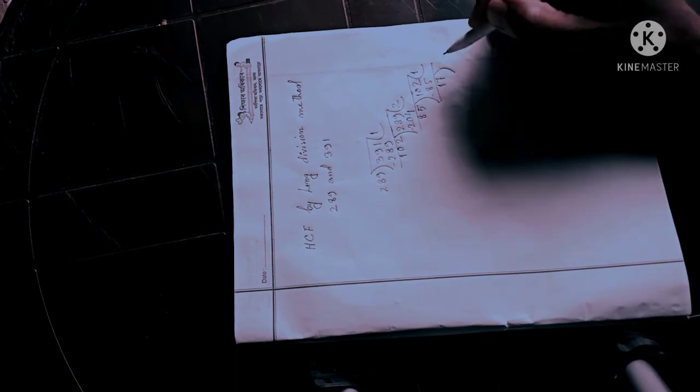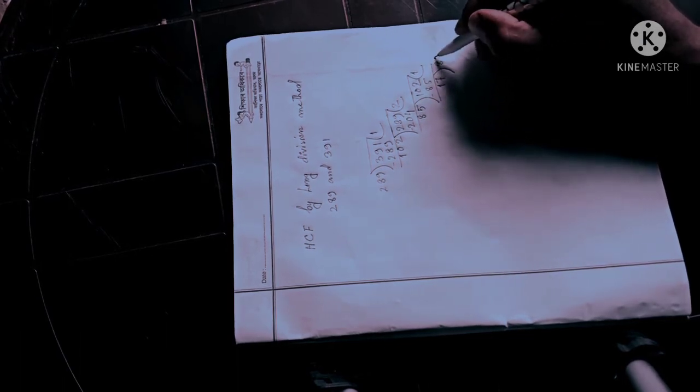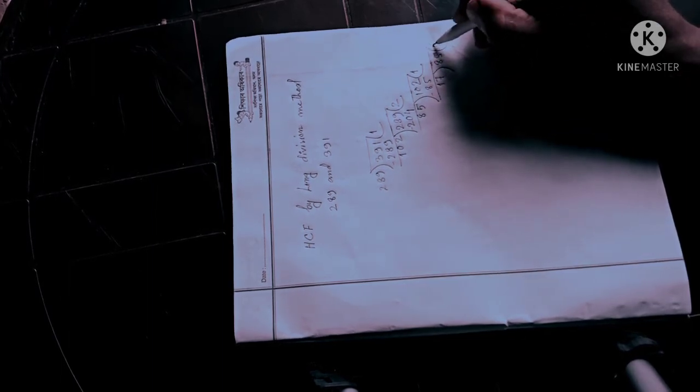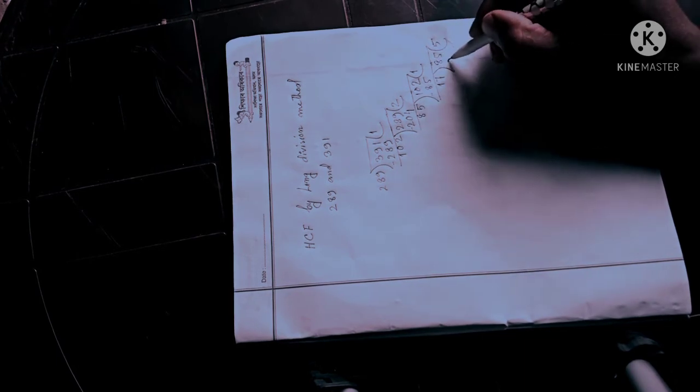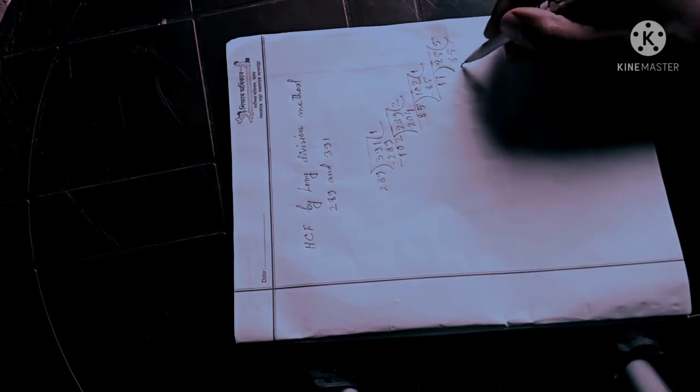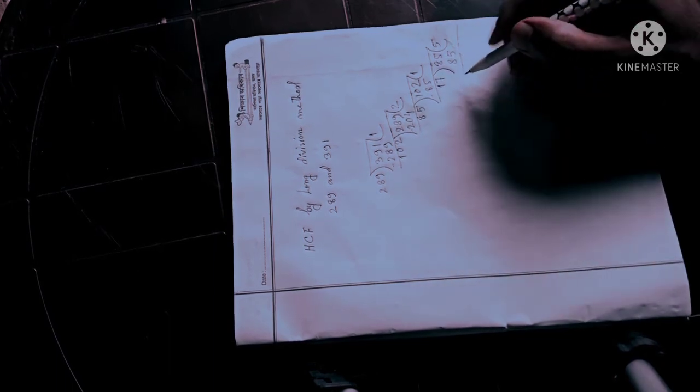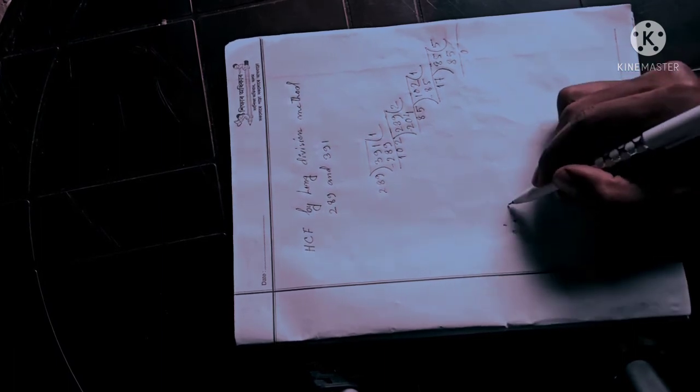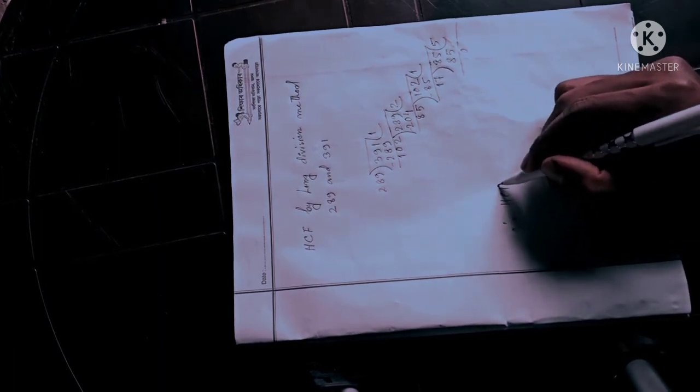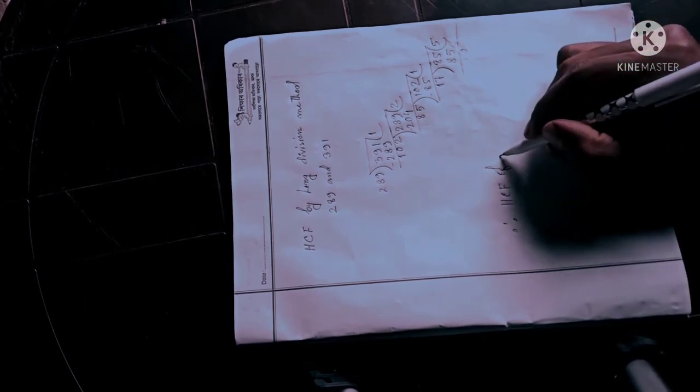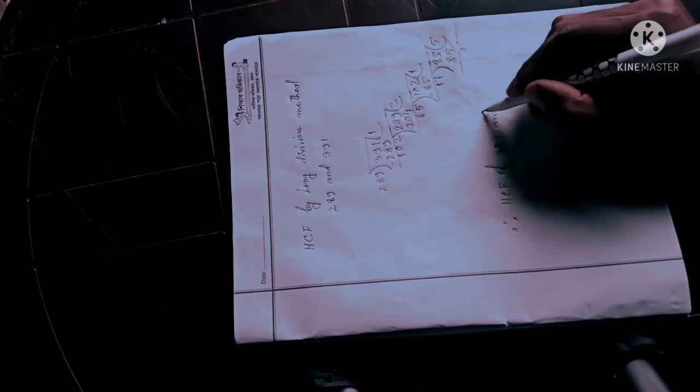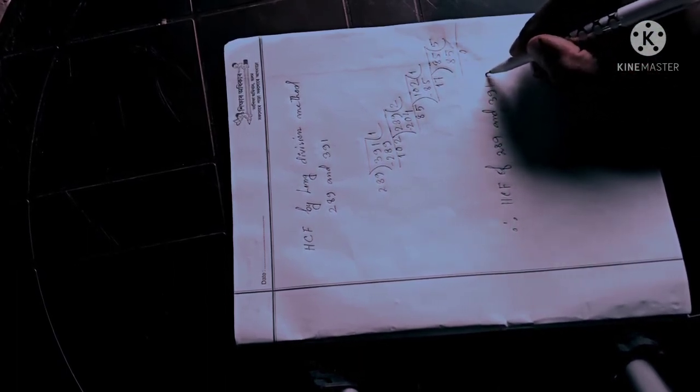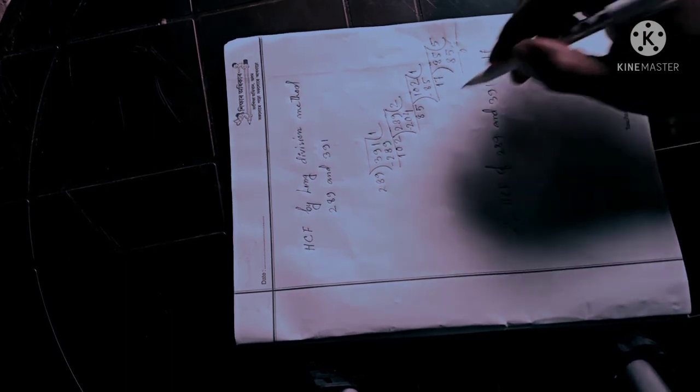17 divided by 85. 85 minus 85 is 0. So the HCF of 289 and 391 is 17.